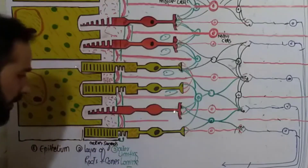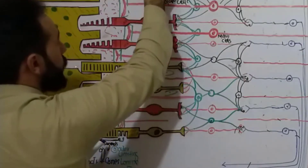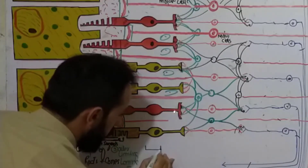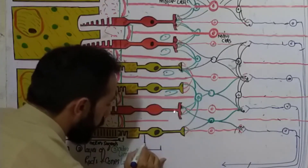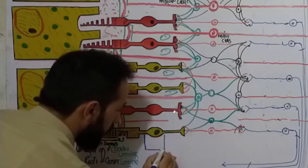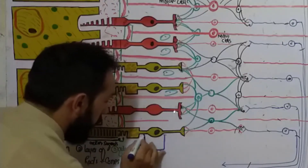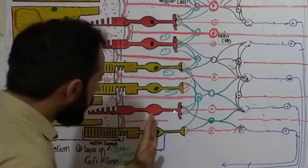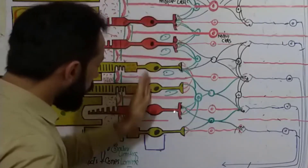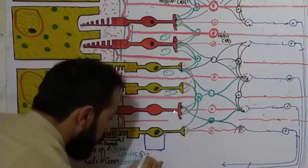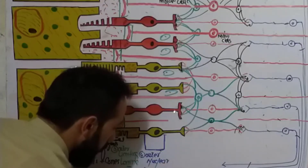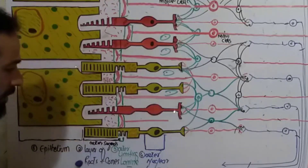Moving further inward — these are the nuclei of the rods and cones. This makes the next layer, which is the outer nuclear layer. This layer is towards the outside and contains all the nuclei of the rods and cones. So this is the fourth layer: the outer nuclear layer.